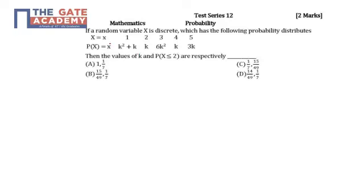So we know that if this is a random variable and if this distribution is valid, then we have summation of this P(X) should be equal to 1. So that is nothing but k² + k + k + 6k² + k + 3k should be equal to 1.